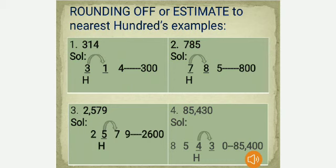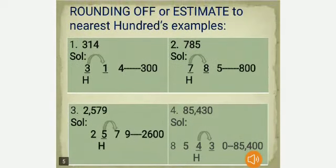Third example: 2,579. We consider the hundreds place, and the next right digit is 7, which is more than 5, so we round up 579 to 600. The overall result is 2,600. Fourth example: 85,430. We round only to the hundreds place. The next digit after 4 is 3, which is less than 5, so we round down 430 to 400, and the overall result is 85,400.